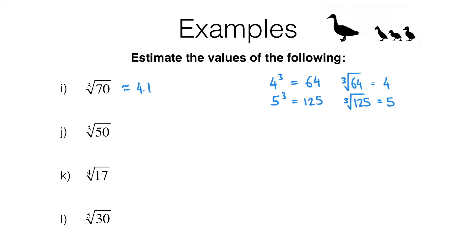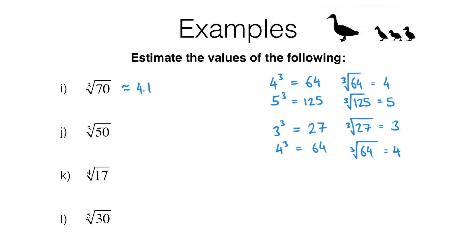For example j, I want the cube root of 50. I know that 3 cubed is 27 and 4 cubed is 64, so the cube root of 27 is 3 and the cube root of 64 is 4. Since 50 is between 27 and 64, my answer is between 3 and 4. 50 is a bit closer to 64 than to 27, so I need an answer a little closer to 4 — but not too close, since 50 isn't really near 63 or 64. I estimate 3.6 or 3.7.